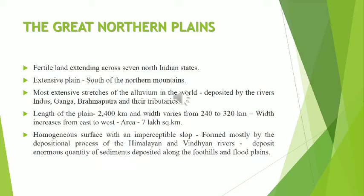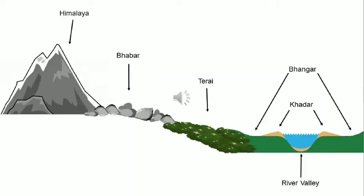The rivers originating from the Himalayas and Vindhya deposit enormous quantities of sediments — dust, mud, soil — settled in a place due to natural activity, along the foot hills and the flood plains. Based on the deposition of sediments, the plain is classified into five types: the Bhabar plain, the Tarai tract, the Bangar plain, the Khadar plain, and the Deltas.